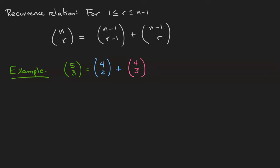Remember that 5 choose 3 counts the number of three element subsets of the set a, b, c, d, e.